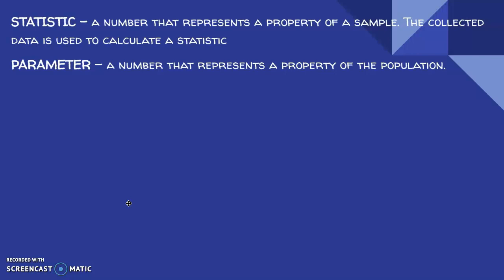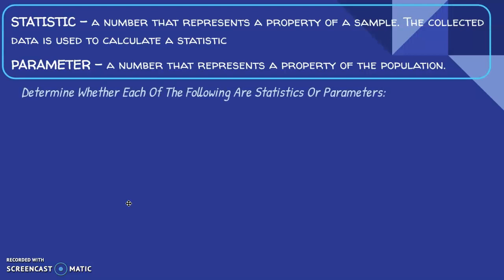Let's see if we can determine whether each of the following are statistics or parameters. 71% of the instructors at Sierra College are men. Would that number 71%, so that's a proportion or a percentage, would that be considered a statistic or a parameter? It's going to be a parameter. The reason is because we are talking about the entire population of instructors at Sierra College, not just a sample of instructors.